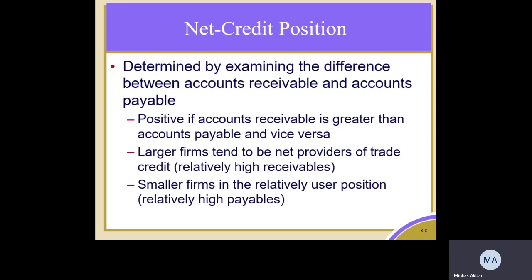Similarly, large firms tend to be net providers of trade credit, with relatively high receivables. Large firms have more cash available and are mature. They want to increase their sales because of large investments. These large firms normally have receivables higher than their payables, meaning they have a positive net credit position.